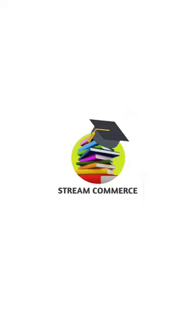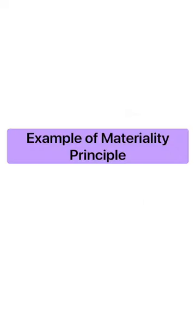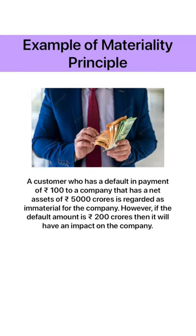Hello students, welcome to my channel Stream Commerce. In this video we are going to study about the materiality principle with an example. A customer who has defaulted in payment of rupees 100 to a company that has a net asset of rupees 5000 crores is regarded as immaterial for the company. However, if the default amount is rupees 200 crores,